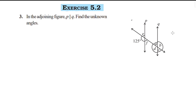Now we have the third question. The adjoining figure shows P parallel to Q. We need to find the unknown angles. One angle given is 125 degrees.